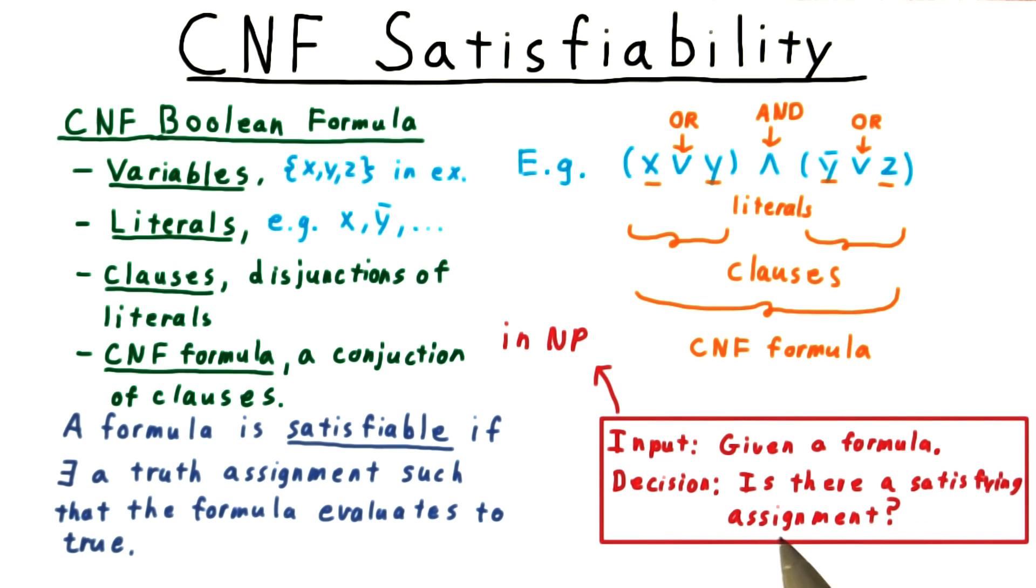Thus, we've accomplished the first part of showing that satisfiability is NP complete. The other part, showing that every problem in NP is polynomial time reducible to it, will be considerably more difficult.